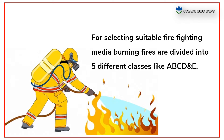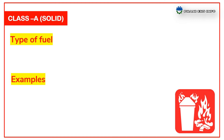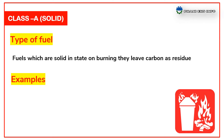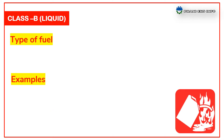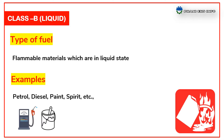Class A fires involve fuels which are solid in state; on burning they leave carbon as residue. Examples of Class A fires: wood, paper, cloth, cotton, charcoal, etc. Class B fires involve flammable materials which are in liquid state. Examples: petrol, diesel,